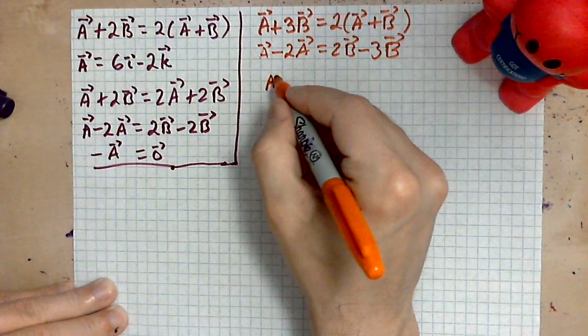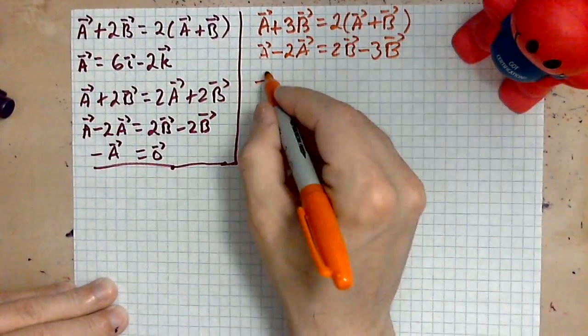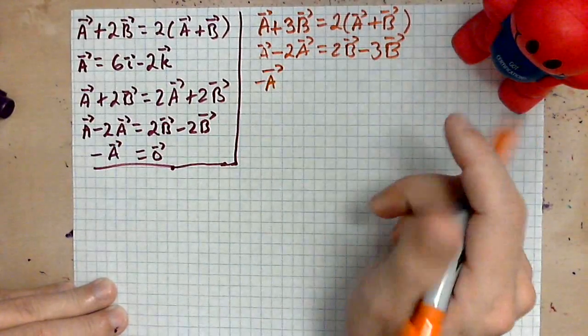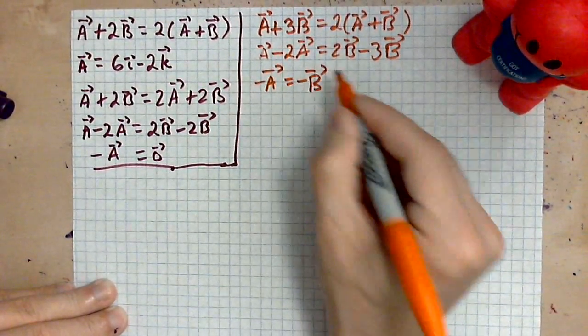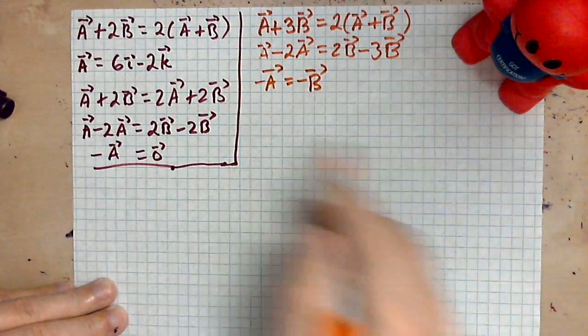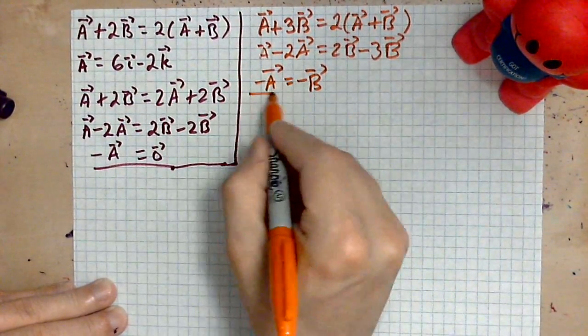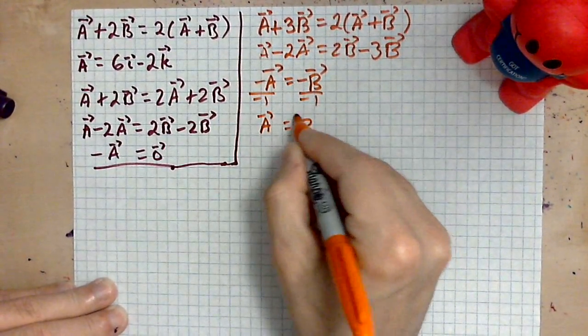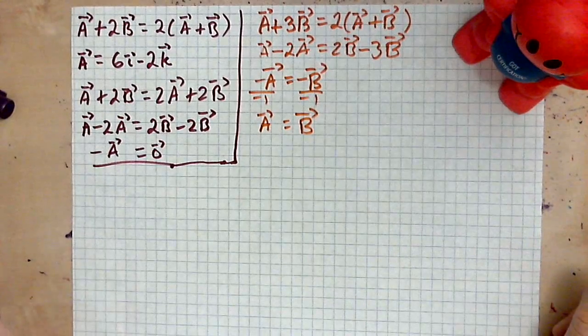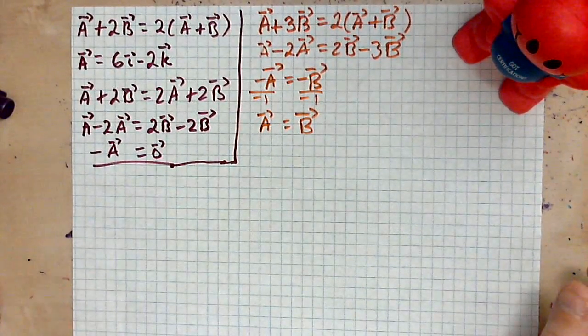Then you get, you know, you have negative a minus 2a is negative a, 2b minus 3b is negative b. And now divide out the negative ones, and so a equals b, which means the following is true.